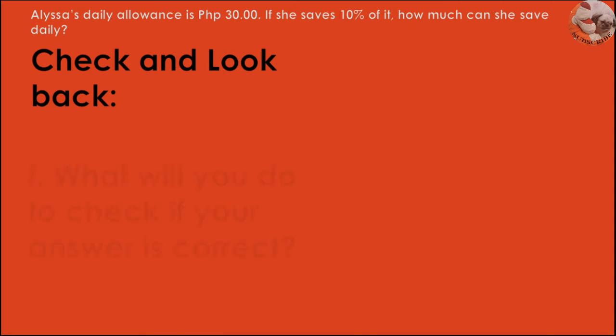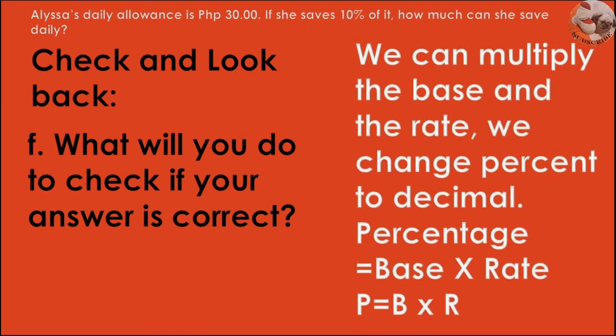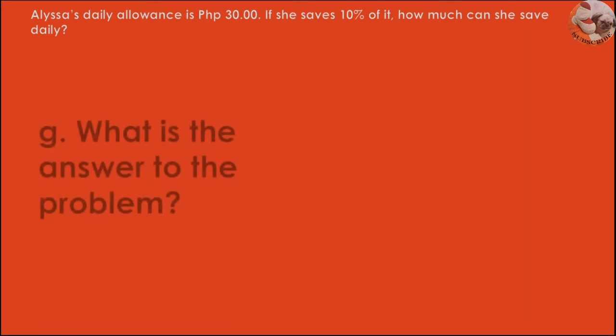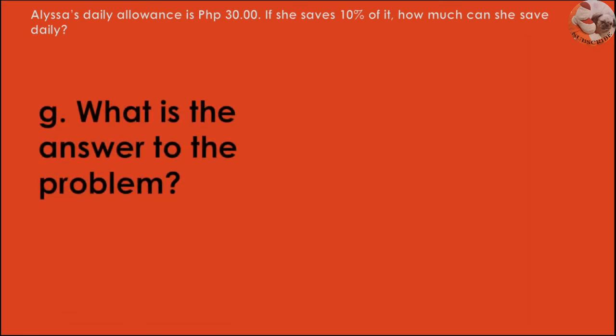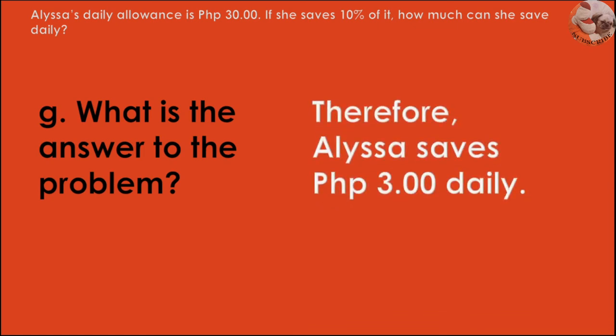Next, check and look back — what will you do to check if your answer is correct? We can multiply the base and the rate, changing percent to decimal. So the formula is P is equal to B times R. What is the answer to the problem? Therefore, Alyssa saves 3 pesos daily.